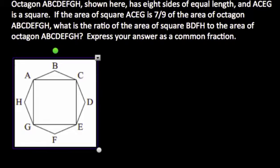Okay, here's the problem. Octagon ABCDEFGH, shown here, has eight sides of equal length and ACEG is a square. If the area of square ACEG is seven-ninths of the area of octagon ABCDEFGH, what is the ratio of the area of square BDFH to the area of octagon ABCDEFGH? Express your answer as a common fraction.